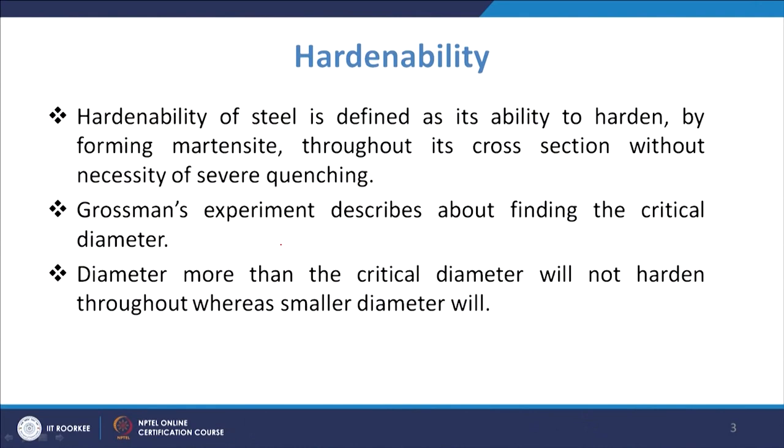Now we will discuss the concept of hardenability. Hardness is achieved normally by the formation of martensite. If you are able to get the martensitic structure with relative ease, we say the material has quite good hardenability; if we are not getting it, we say it has poor hardenability. Hardenability of steel is defined as its ability to harden by forming martensite throughout its cross section without the necessity of severe quenching.